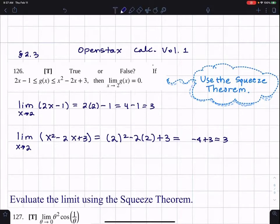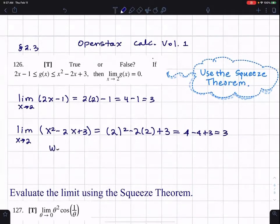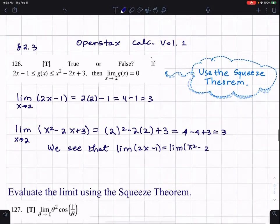The two outside ones have the same limit, which is 3. And so we see that limit 2X minus 1 is equal to the limit of X squared minus 2X plus 3 as X approaches 2, which equals 3.